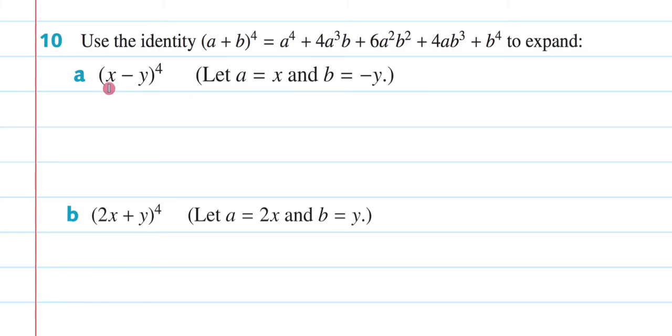So we need to expand out (x - y) raised to the 4, and we need to use this identity to do so. We are told that a equals x, so that means every time I see an a here, I'm going to put an x there. I'm told that b equals negative y, so every time I see a b, I'm going to put negative y there. And that's all we're going to do here.